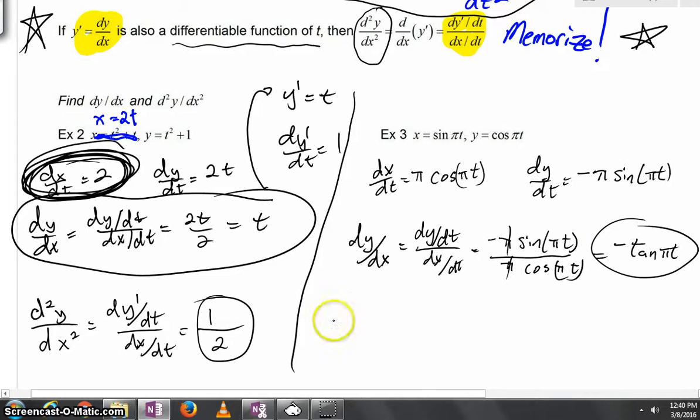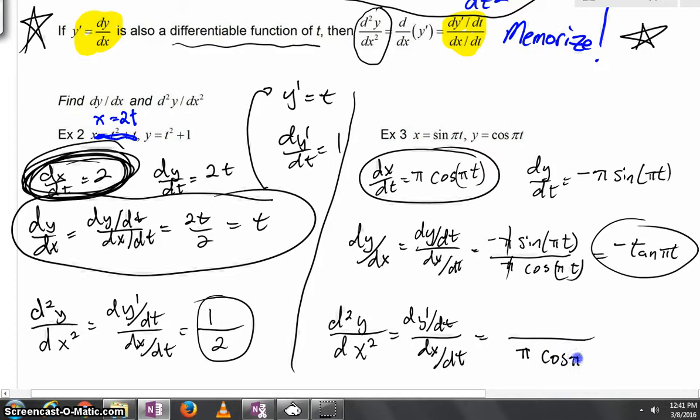Now, as we talk about a second derivative, we'd have d squared y all over dx squared. We'll need dy prime dt all over dx dt. And of course, dx dt we just found. It was up here. That's pi cosine of pi t.